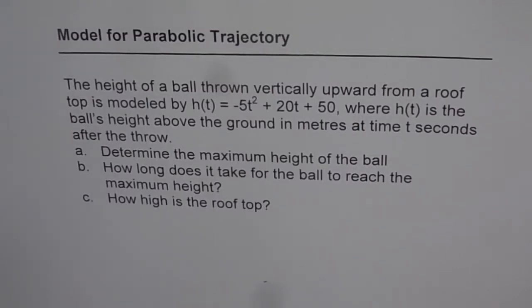The height of a ball thrown vertically upward from a rooftop is modeled by h(t) equals minus 5t squared plus 20t plus 50, where h(t) is the ball's height above the ground in meters at time t seconds after the throw.